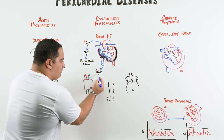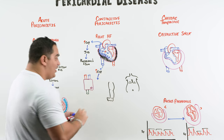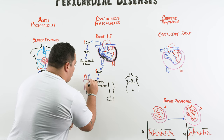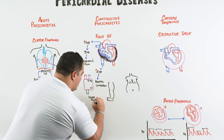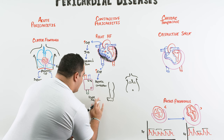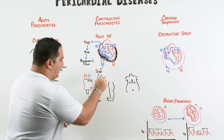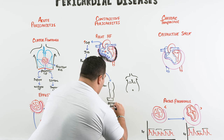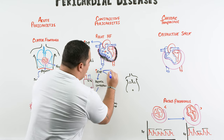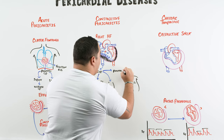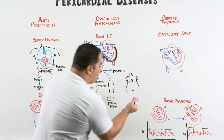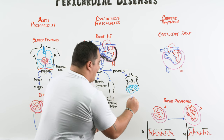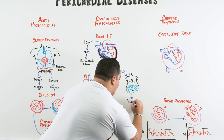Elevated central venous pressure can also extend to the liver, causing hepatomegaly and hepatic congestion, potentially progressing to liver failure or cirrhosis. It can extend to the lower extremity veins, causing pitting edema. It can also increase portal pressures, leading to portal hypertension and ascites — fluid accumulating in the abdomen. These are all classic features of right heart failure.